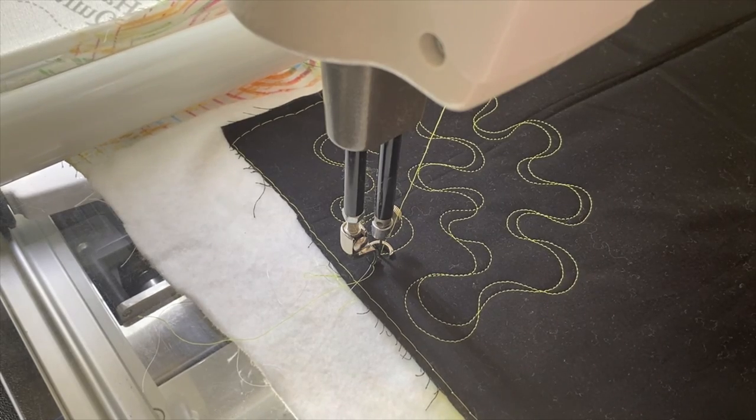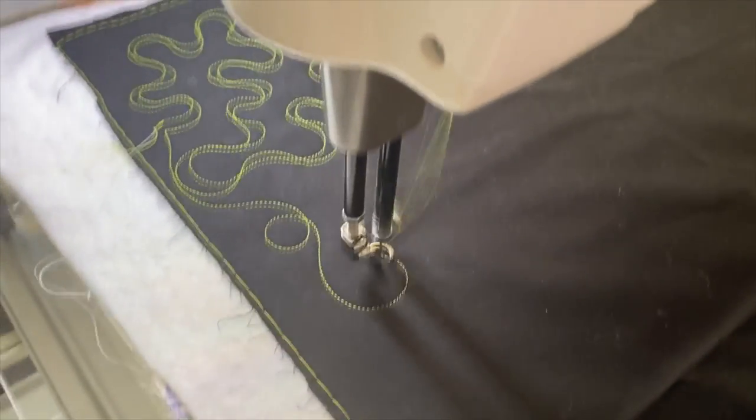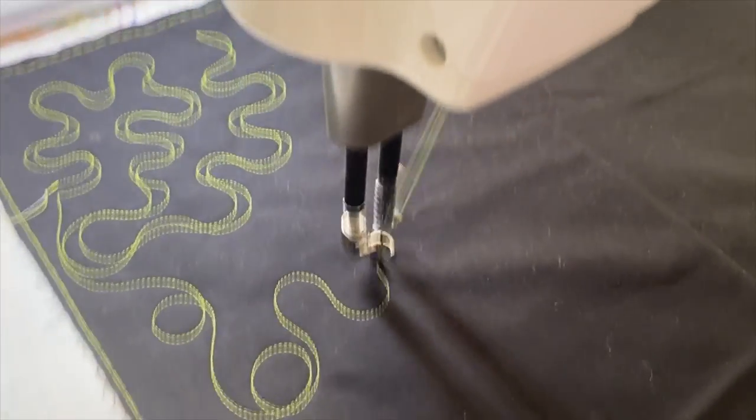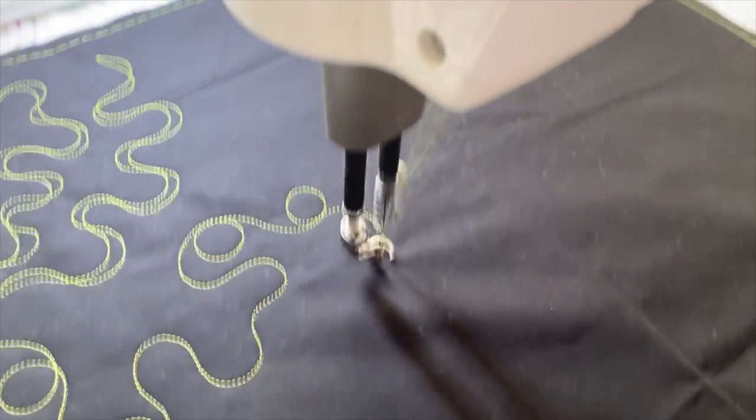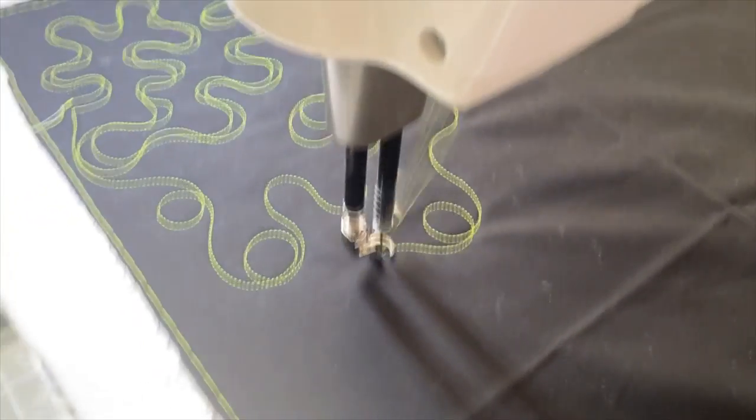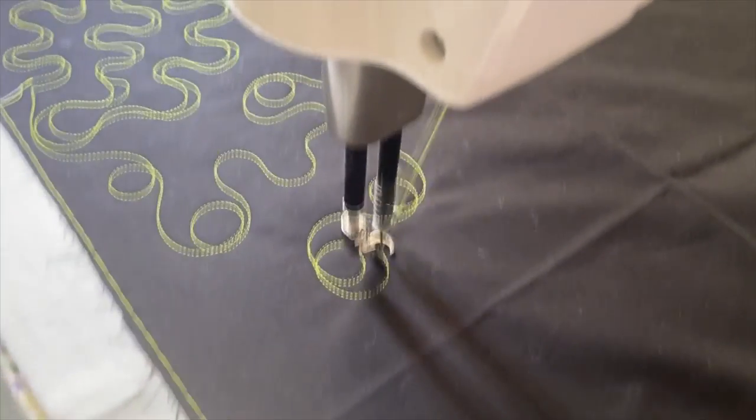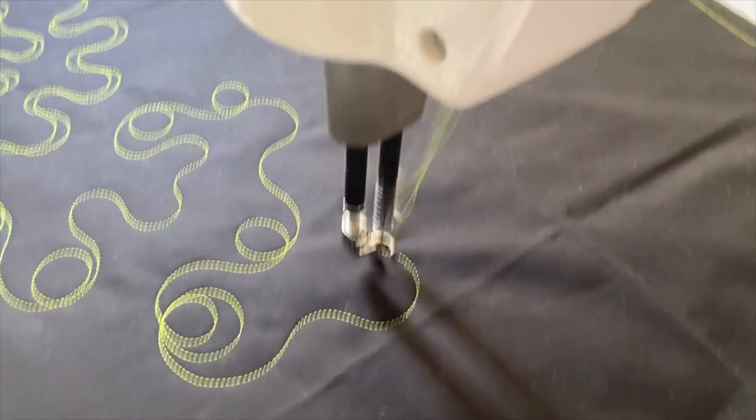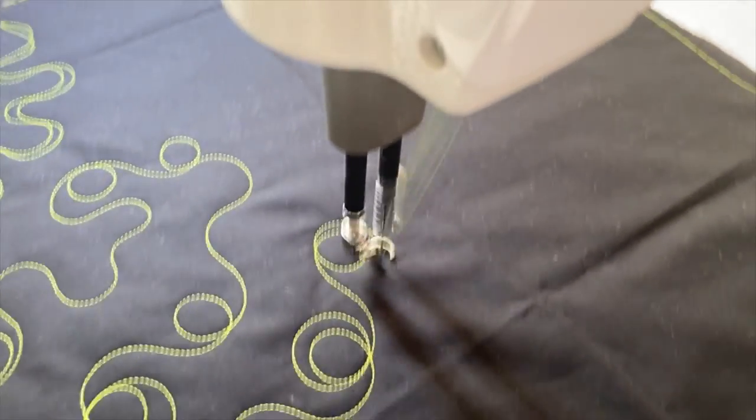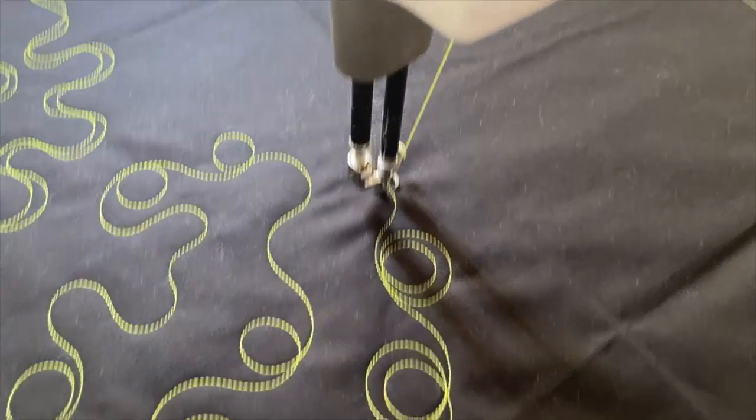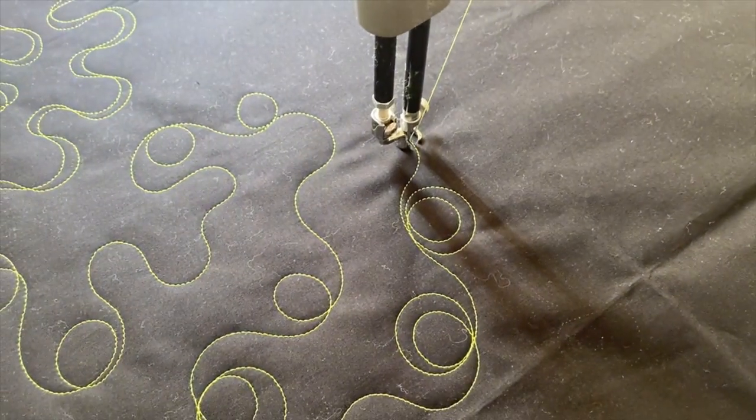So the next one is loops. And number four is adding two loops. That's a nice way to stipple too or meander. So now you have four ways.